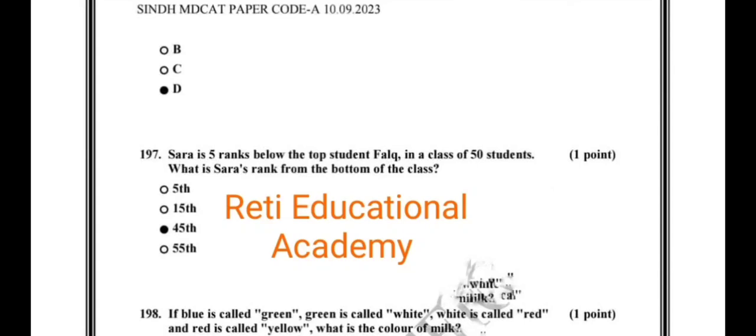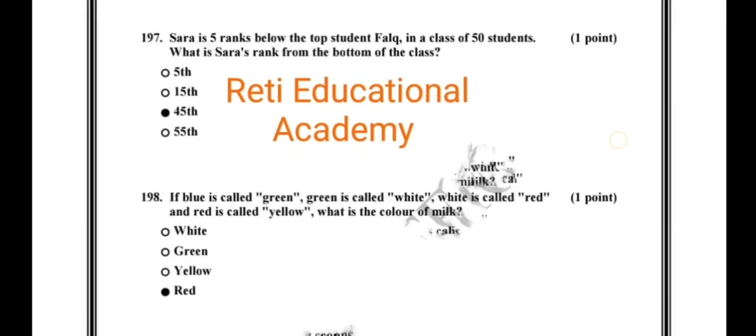Question number 197: Sarah is five ranks below the top student Fallak in a class of 50 students. What is Sarah's rank from the bottom of the class? The answer is 45th.